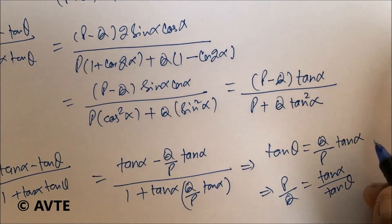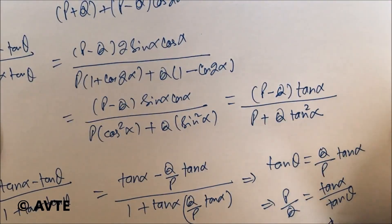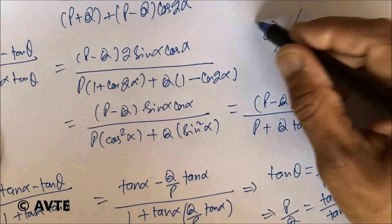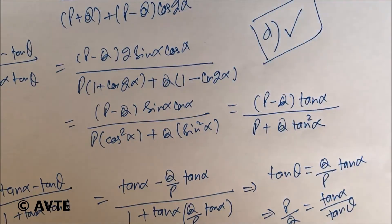This is option number D. So D is the correct answer. D is the correct answer, which is tan α over tan θ.